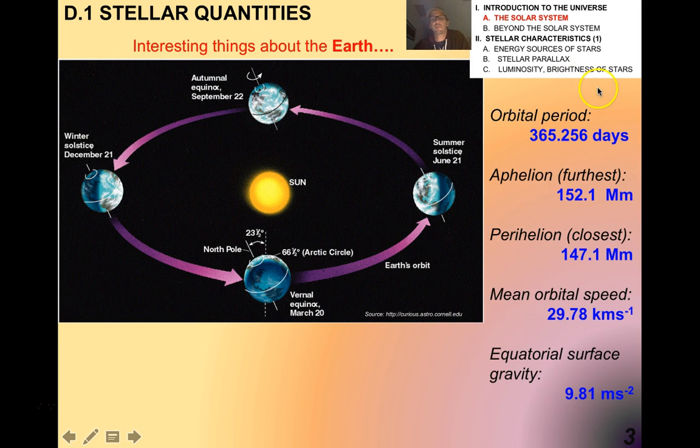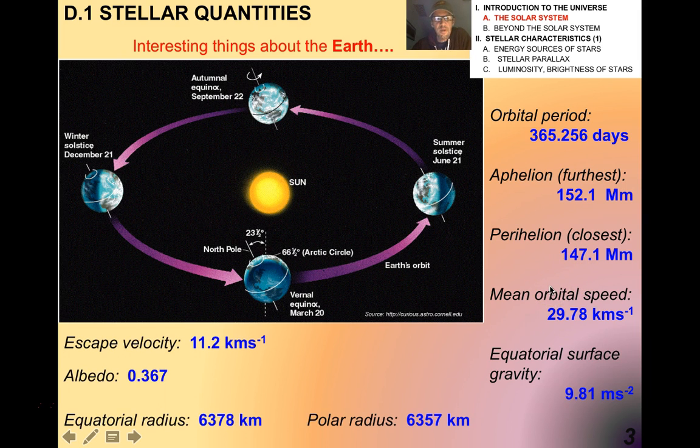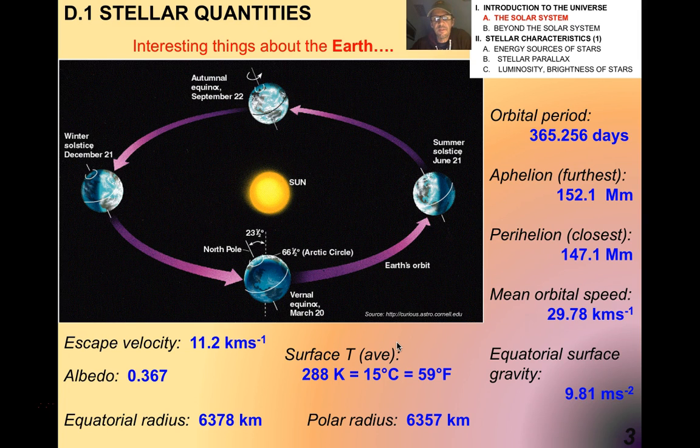Some interesting things about Earth. It's a little over 365 days to go around the sun. Its furthest point from the sun is aphelion. Its closest distance is perihelion. Its mean orbital speed is about 30 kilometers per second. We live under 9.81 meters per second squared. Look at how the equatorial radius and polar radius are different, because Earth bulges out at the equator slightly. Its average surface temperature is about 15 degrees Celsius or 59 degrees Fahrenheit.